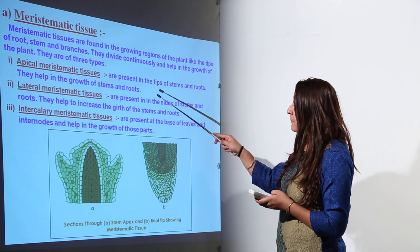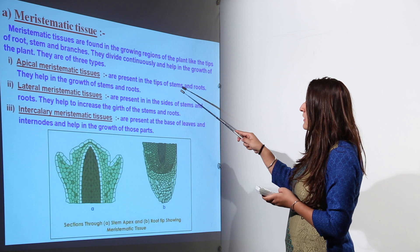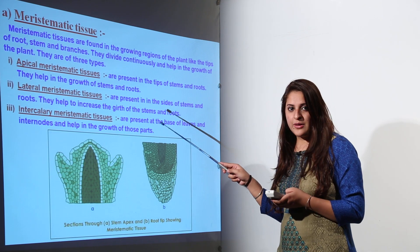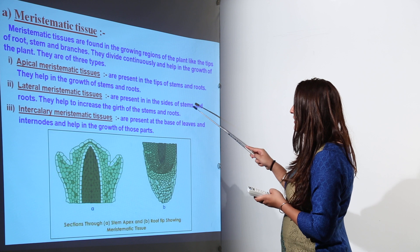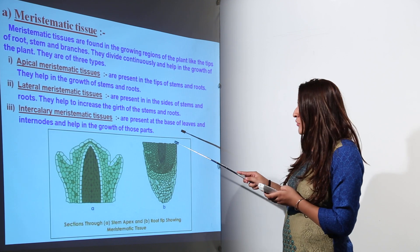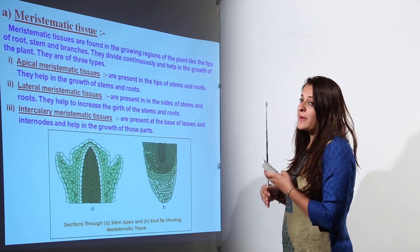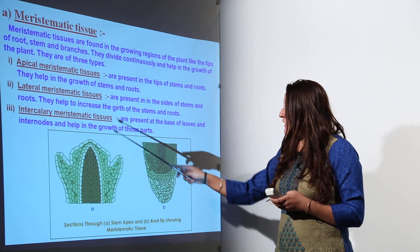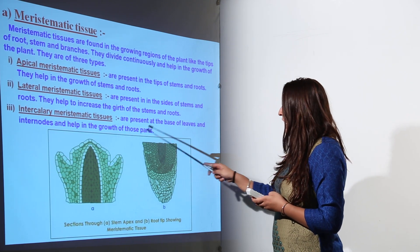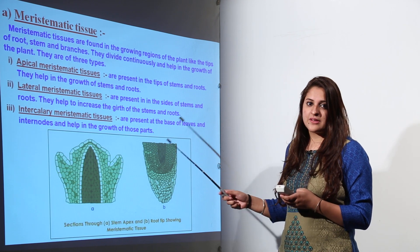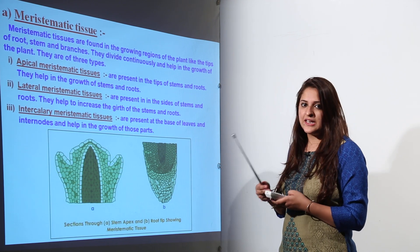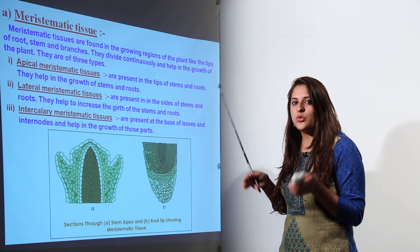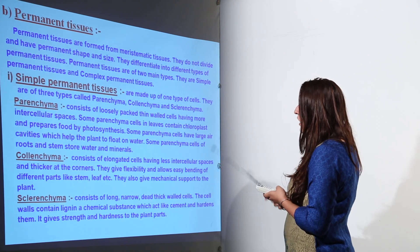There are three types of meristematic tissue. Apical meristematic tissue is present in the tips of stems and roots. Lateral meristematic tissue is present in the sides of stems and roots, providing mechanical strength. Intercalary meristematic tissue is present at the base of leaves and internodes, helping growth in the internodal regions.